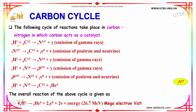You got your proton which merges with carbon-12 to form nitrogen-13. This is not stable and there will be emission of gamma rays. This is your first equation.